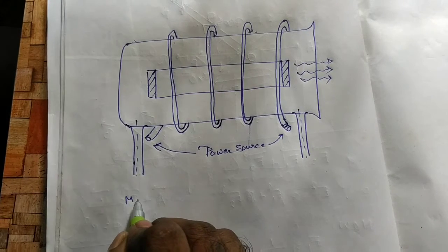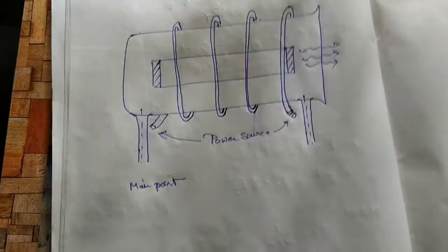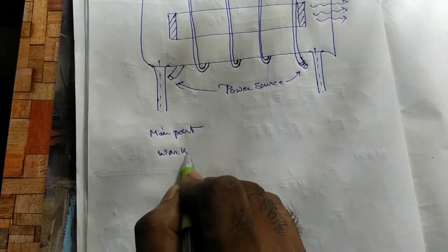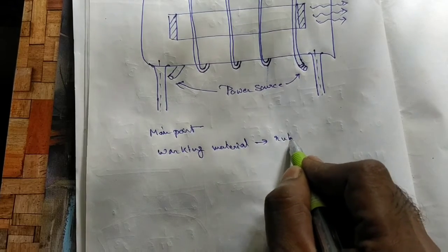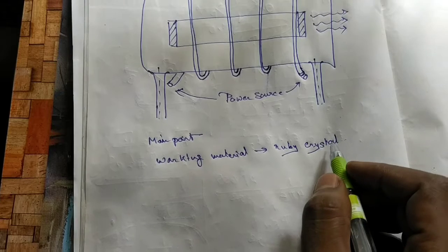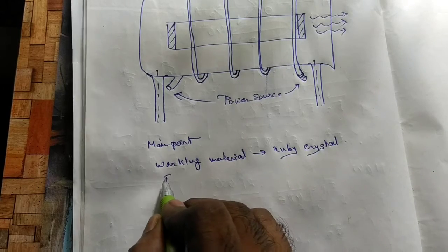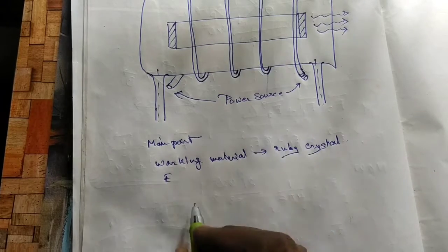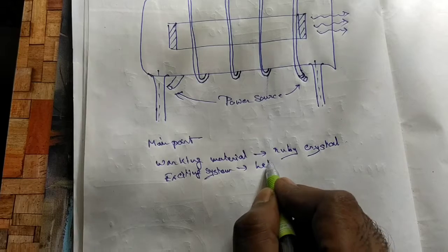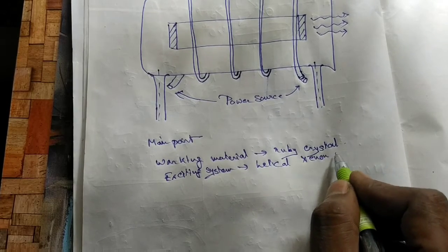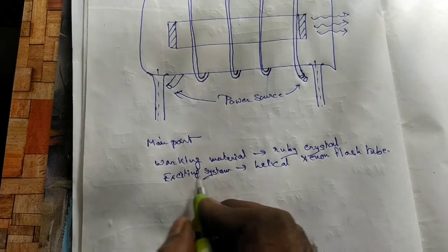The main parts of the ruby laser are: first, the working material, which is a ruby crystal. Second, the exciting system — which source is exciting this whole system is a helical xenon flash tube. And another part we have is a cooling system.